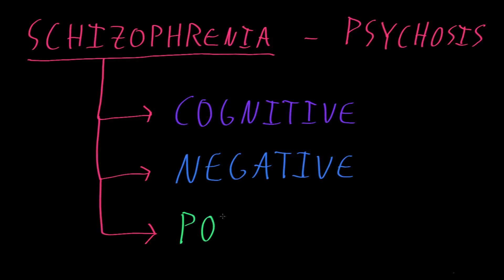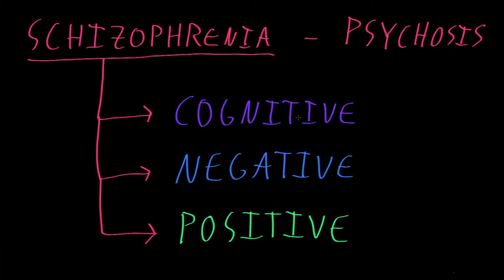The third big category are often called positive symptoms, and these are typically the things that we refer to with this term psychosis — things like the hallucinations and delusions that are very characteristic of schizophrenia and the other psychotic disorders. But schizophrenia can really produce these very complex syndromes spanning many different kinds of mental functions, from the more thinking-type cognitive abnormalities, to the more emotional and motivational negative symptoms, to the more perceptual positive symptoms.